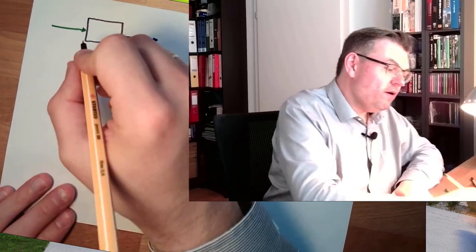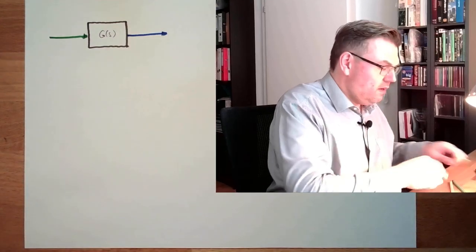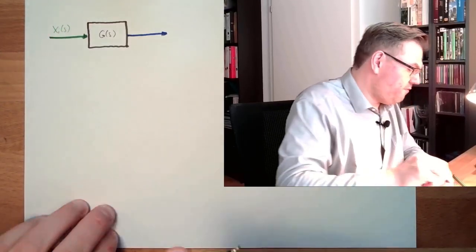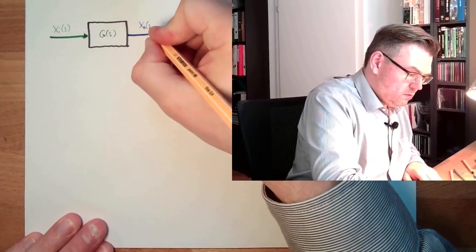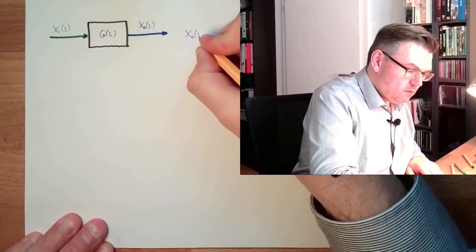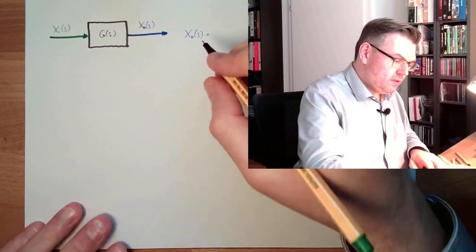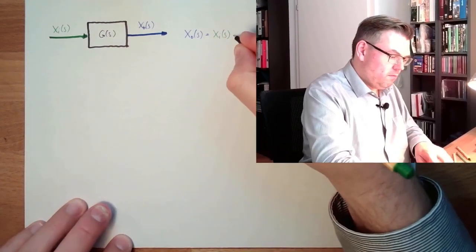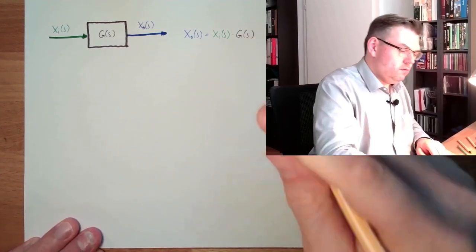We said we had different things to take care about — linear time invariant, non-reactive, and so on. We end up with a transfer element with an input and an output. The transfer element is described by its transfer function G(s). The input is Xi(s) and the output is XO(s), where XO(s) equals Xi(s) multiplied by the transfer function.